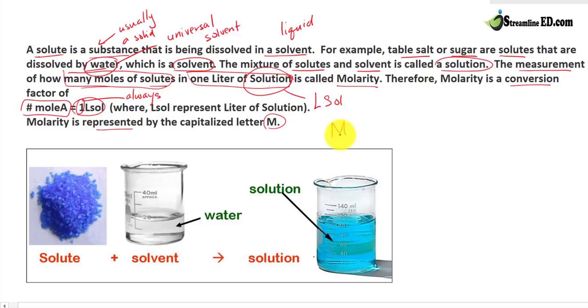So when you see a capitalized M, you have to realize that this is the number of moles, or whatever the chemical it is, over one liter of solution. Or, one liter of solution equal to number of moles of A. Remember, this is a conversion factor. It doesn't matter how we write it. So let's solve this one problem together.